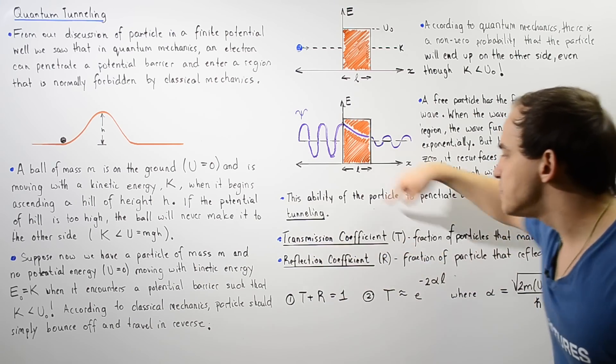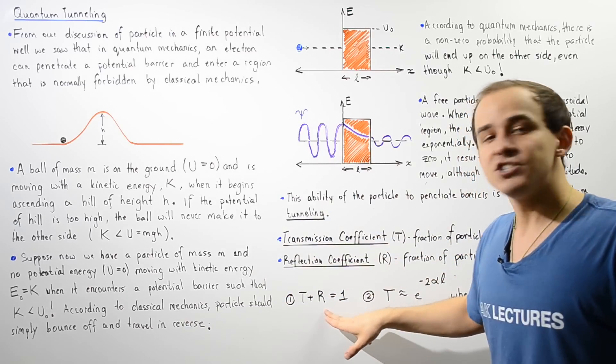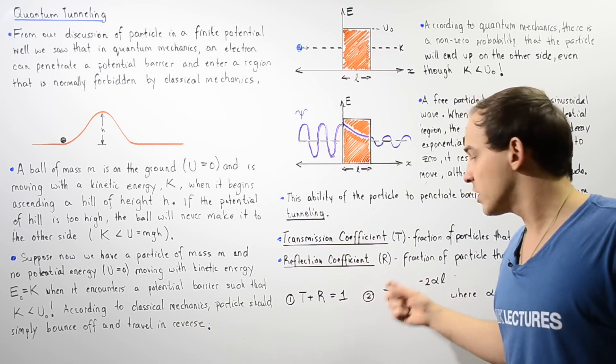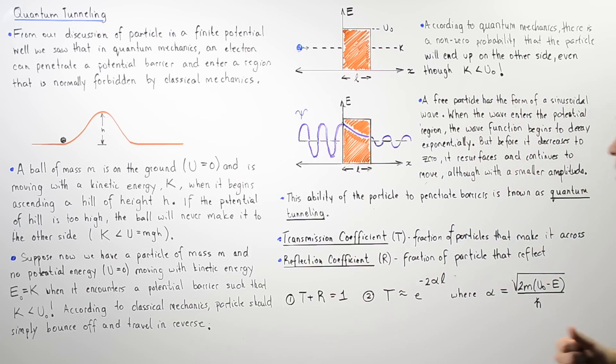So basically, T plus R, the transmission coefficient plus the reflection coefficient is always equal to 1, where 1 corresponds to 100% of those particles.